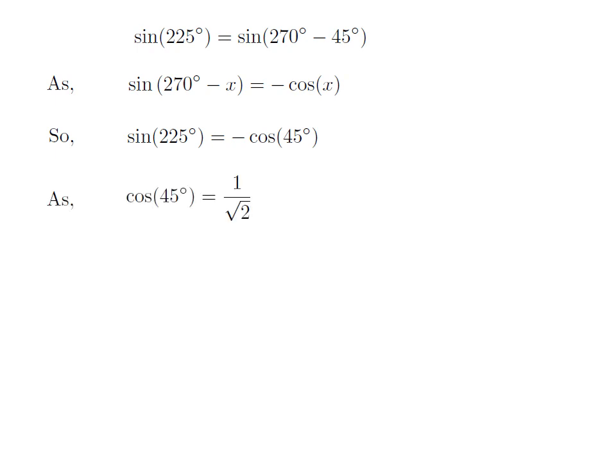We know the value of cosine of 45 degrees is equal to 1 upon square root of 2. So, the value of sine of 225 degrees is equal to minus 1 upon square root of 2.